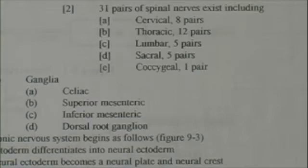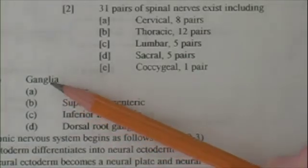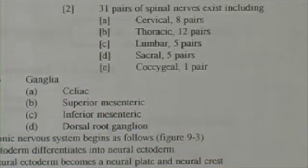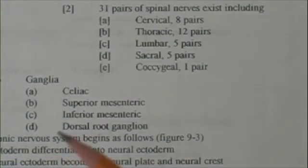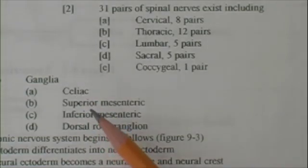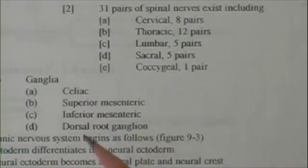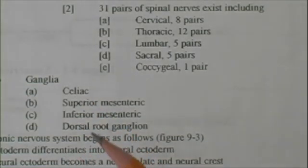The other part of the peripheral nervous system are the ganglia. I've already shown you the dorsal root ganglion. Some other important ganglia are in the abdomen: the celiac ganglion, the superior mesenteric ganglion, and the inferior mesenteric ganglion.